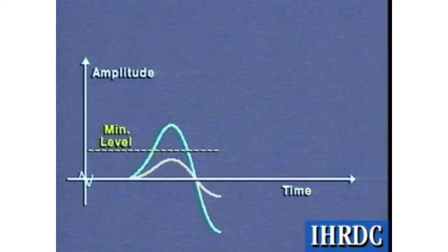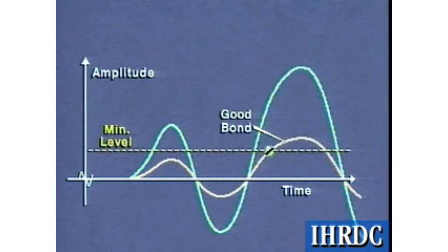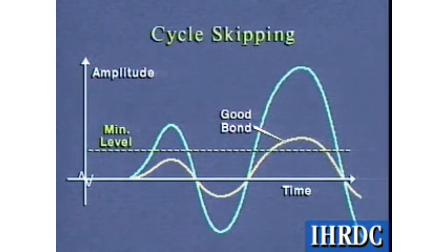If the pipe signal is very low, the first arrival may not reach the minimum amplitude level, but the second or later positive arrival may do so. This is known as cycle skipping. Neither of these effects should be of concern, since they relate to a condition of good bonding.